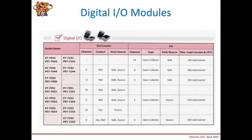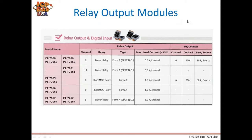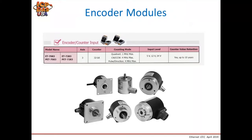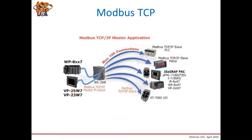Here's our selection guide for digital IO modules. Some digital inputs have counter functionality as noted in the table. We also have relay output modules, some with digital inputs as well. Additionally, we have models specifically designed for high-speed inputs and counters like encoders. Here's an example system diagram showing Modbus TCP connectivity with our WinPak and VPak connected to a standard Ethernet switch like our NS-208, supporting up to 100 Modbus TCP slave devices.